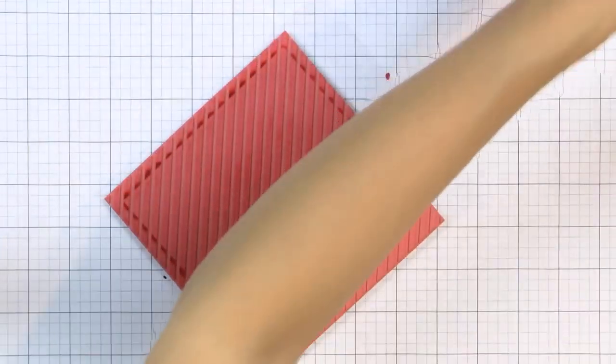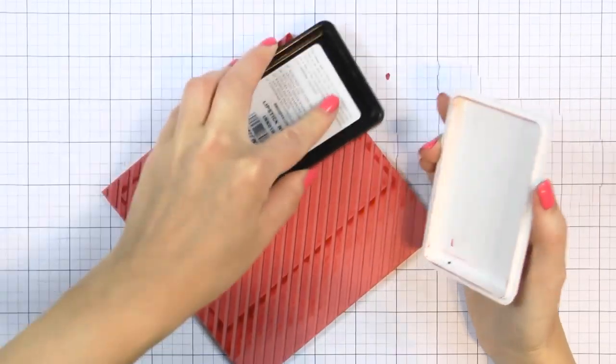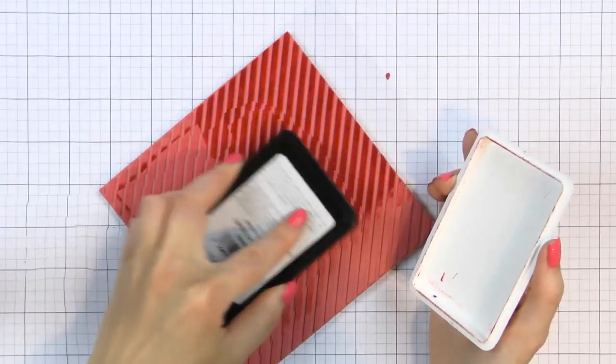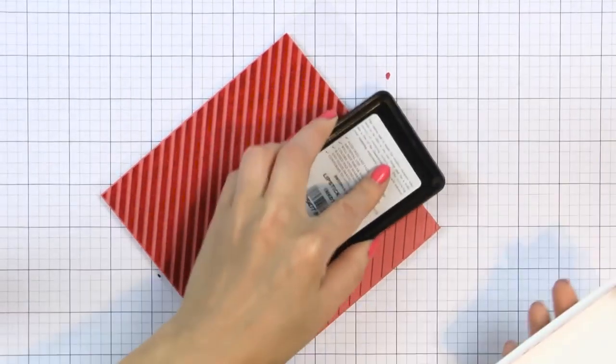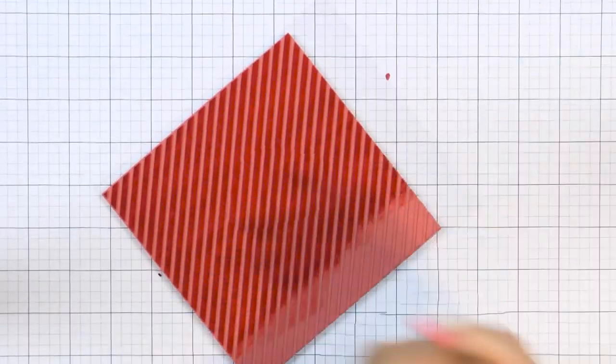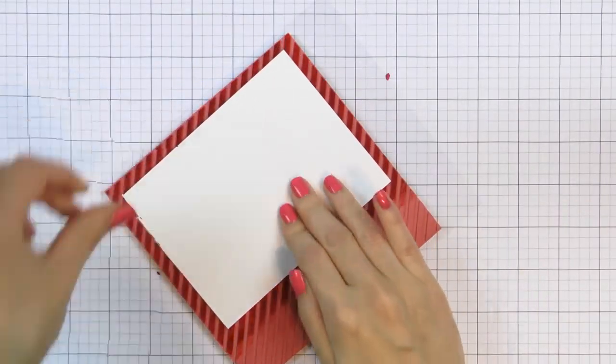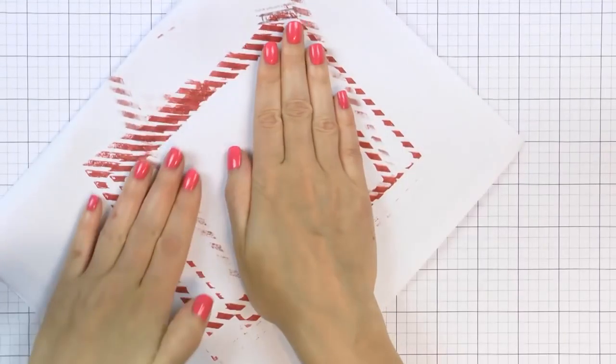And in case you're wondering, since this is such a large stamp, placing cardstock panel over the stamp is easier rather than picking up the stamp and placing it over the paper. If you do the latter, you need to have a clear block that is the size of the stamp, so 6 by 6 inches.